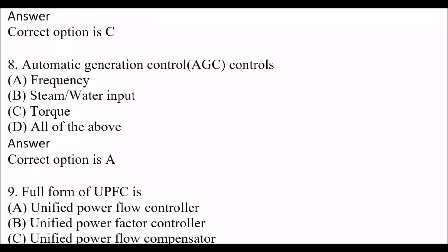Next question: Automatic Generation Control (AGC) controls — Option A: Frequency. Option B: Steam and Water Input. Option C: Torque. Option D: All of the above. The right answer is Option A, Frequency. AGC controls Frequency only — not Steam and Water Input, and not Torque.